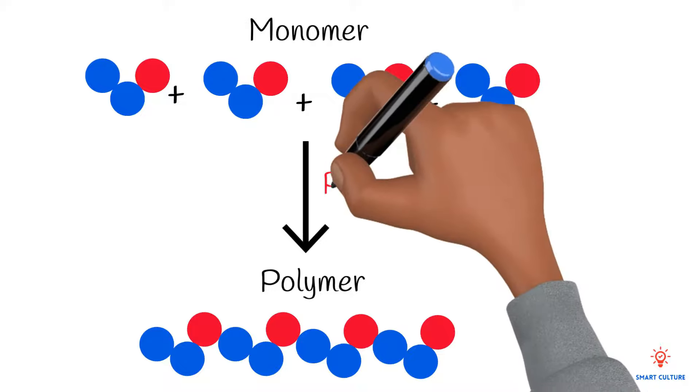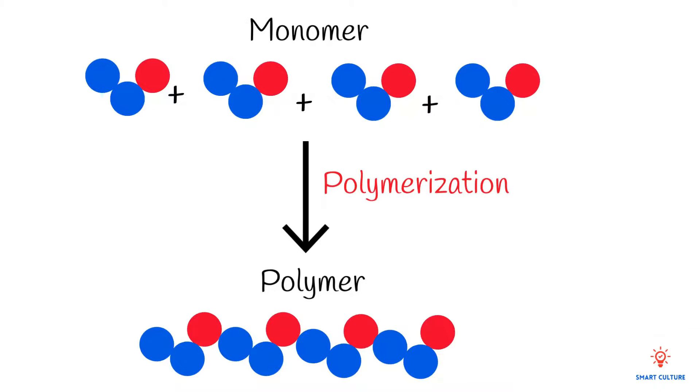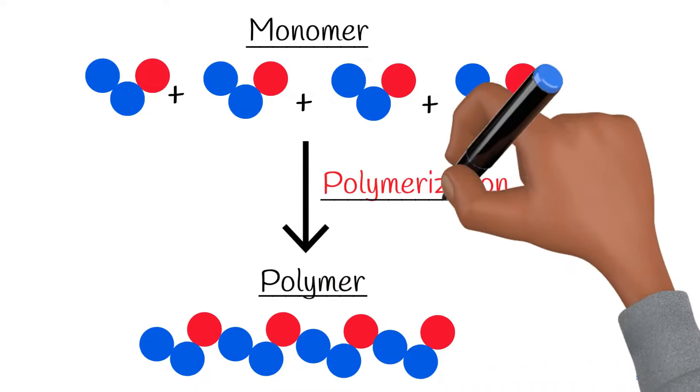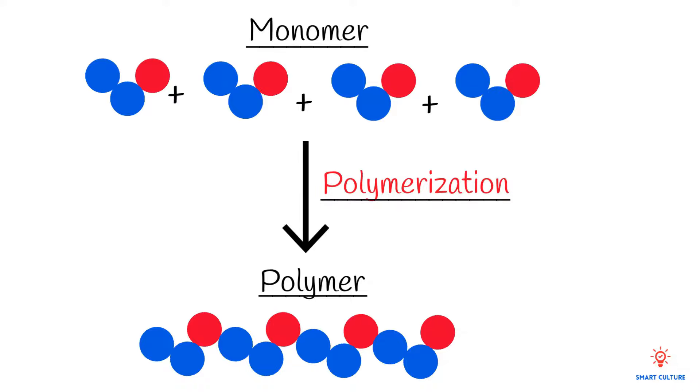This process is called polymerization. So what do we have here? We have monomers, polymers, and the process of polymerization. Let's write out the formal definitions of these terms.